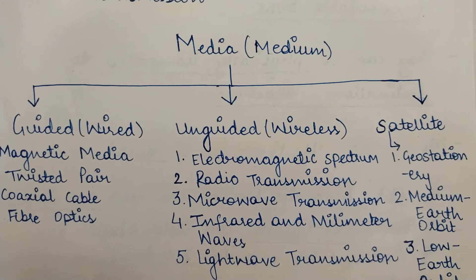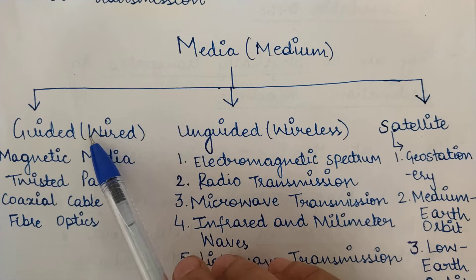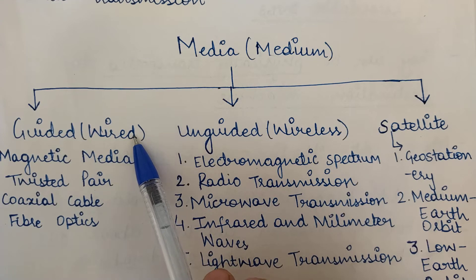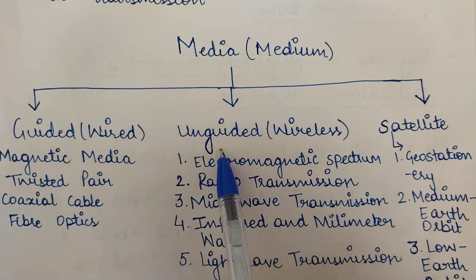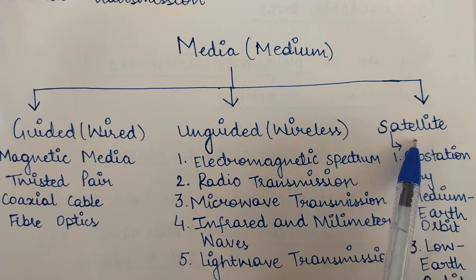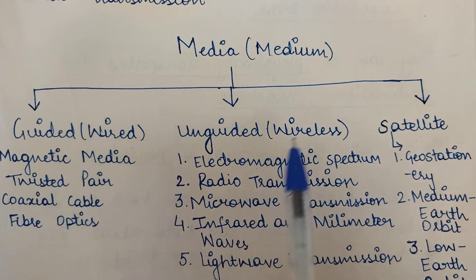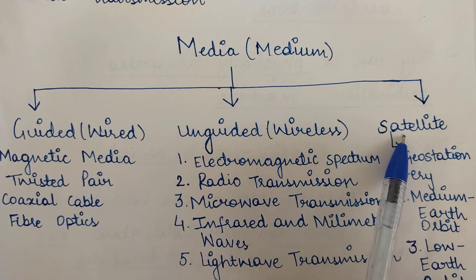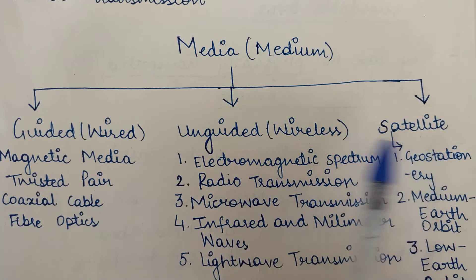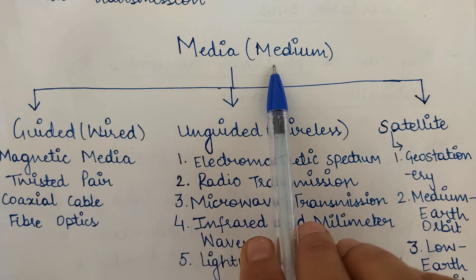There are three broad categories into which a transmission medium can be divided. One is the guided medium, also known as the wired medium. Another is the unguided medium, also known as the wireless medium. The third category is the satellite medium. So you either transmit data through a wired communication channel, a wireless communication channel, or through satellites.